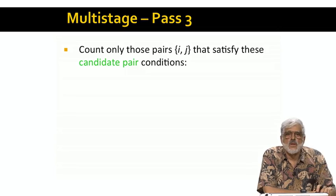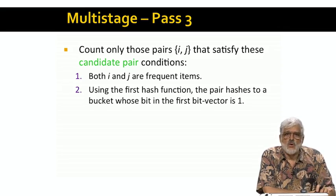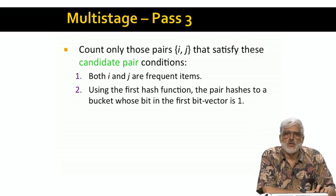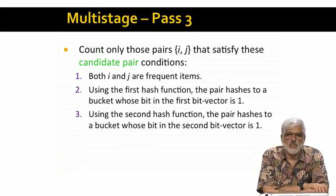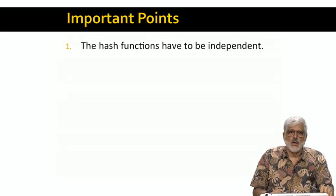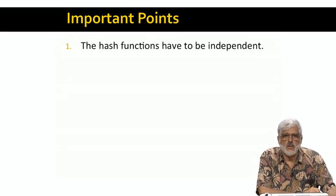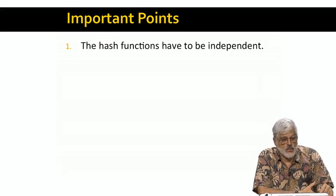On the third pass, the candidate pairs are defined by three conditions. First, both items are frequent by themselves — the A Priori condition. Second, according to the hash function used for the first pass, the pair hashes to a frequent bucket — these first two are the PCY conditions. Third, according to the hash function used on the second pass, the pair also hashes to a frequent bucket. An important note: the hash functions used at each stage must be independent of one another; otherwise each would report the same frequent buckets and we wouldn't get any benefit from the additional stage.